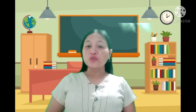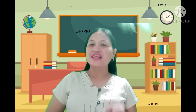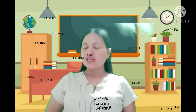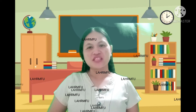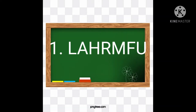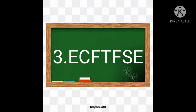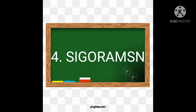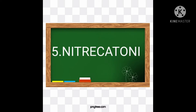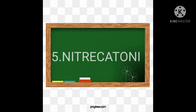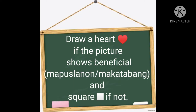But before we start our proper lesson, let's try to answer these following jump book letters to form the hidden words. Draw a heart if the picture shows beneficial — kung mapuslan or makatabang — and a square if not.